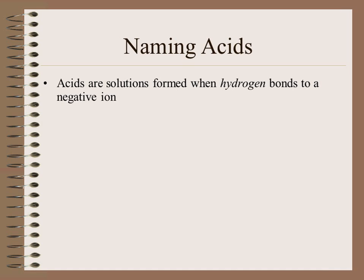When we look at a formula and we note that hydrogen is at the beginning of the formula, that's a key indication that we should be thinking that this might be the formula for an acid. Typically, acids are going to be aqueous solutions, so the combination of a formula starting with H and an AQ written as the state for the substance are what we would key off of to identify a substance as being acidic.